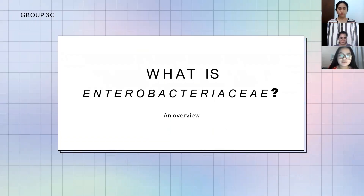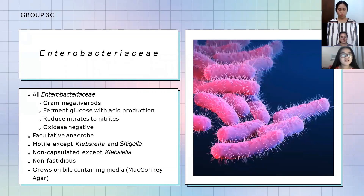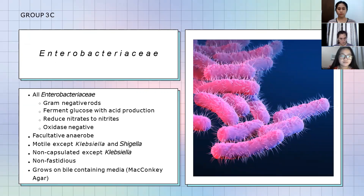Before we proceed to the presentation of our case study, let me give an overview of what Enterobacteriaceae is. Enterobacteriaceae are gram-negative rods, meaning in gram stain they appear red and rod-shaped. All of them are glucose fermenters, utilizing glucose anaerobically as they are facultative anaerobes. Most can reduce nitrates to nitrites and they are oxidase negative. Most are motile, except Klebsiella and Shigella.